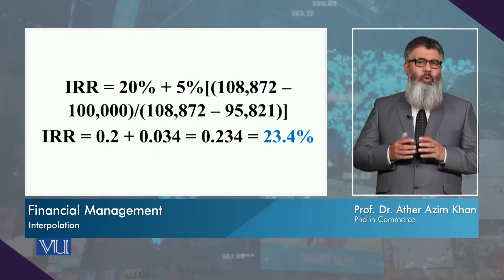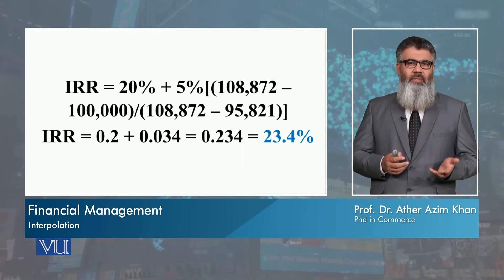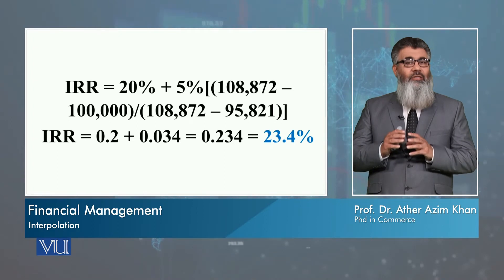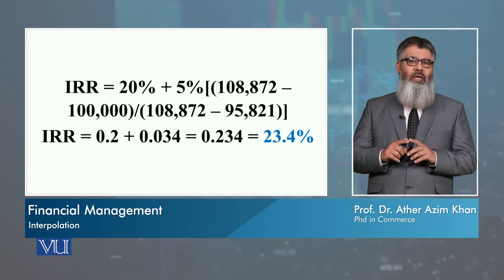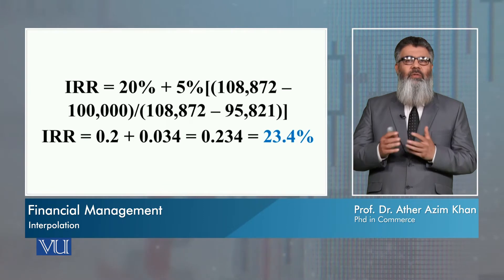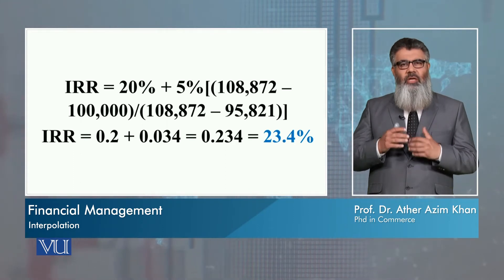We take 20% and 25%, and we add a certain fraction of 5% — this 5% being the difference between 20% and 25%. So if we interpolate 20% and 30%, we add a fraction of 10%. If we interpolate 20% and 23%, this difference will be 3%, which we write in the formula.